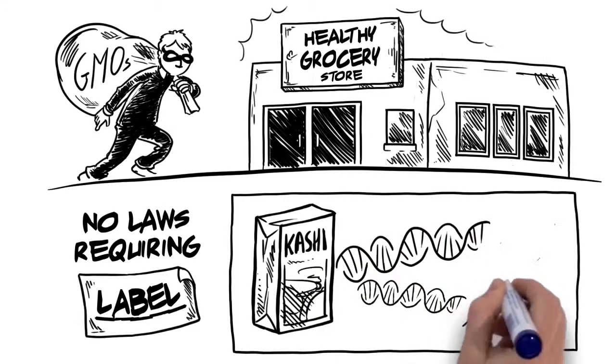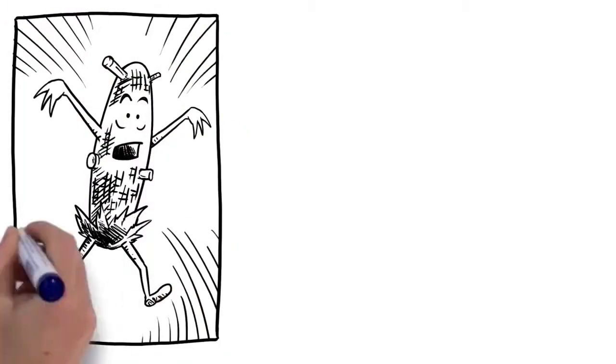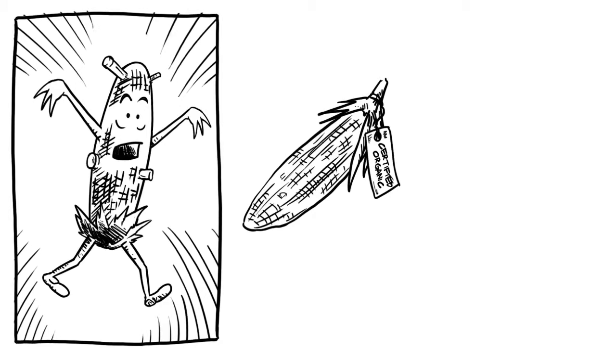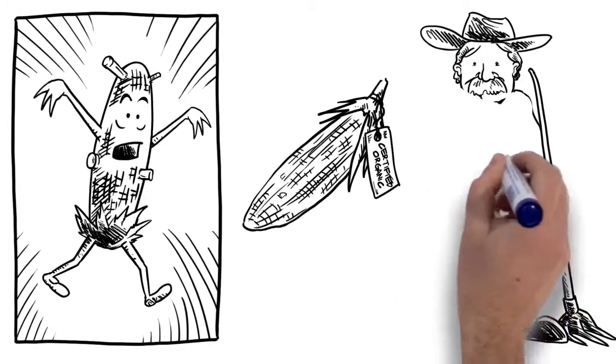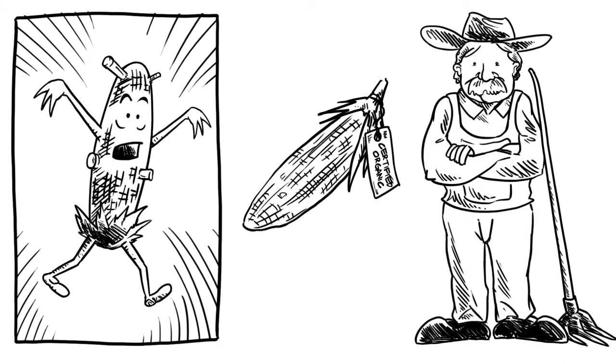So what can you do to avoid these GM Frankenfoods? The only way for you to avoid them is to buy certified organic, because by definition, organic cannot be GMO. However, you want to buy from a farmer or grocer who guarantees the organic integrity from the farm to your shopping cart.